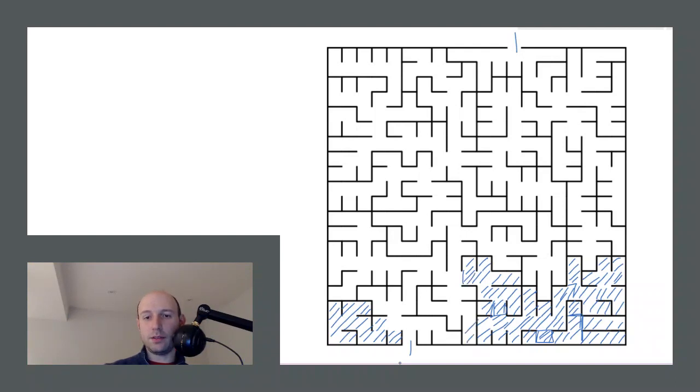What happens if you color in all of the dead ends and all of the pathways that lead only to dead ends? You color in all the places you shouldn't go. You're not supposed to go to the dead ends.